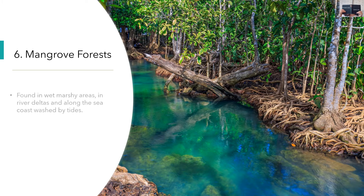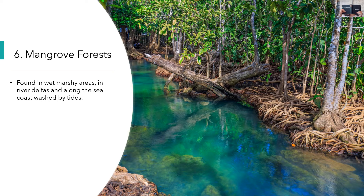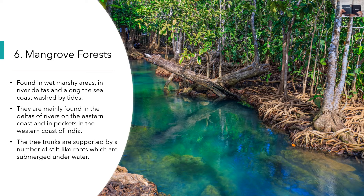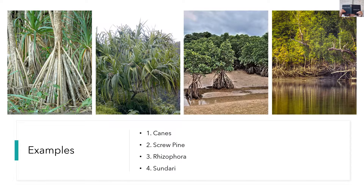Mangrove Forest: These forests are found in wet marshy areas in river deltas, in saline or other swampy areas along the sea coast. They are also called tidal forests. They are mainly found in deltas of rivers on the eastern coast and in pockets of the western coast of India. The tree trunks are supported by stilt-like roots which are submerged underwater. Some important trees are rhizophora, canes, screw pine, and palms. Sundari trees are found in the Sundarbans delta of India and Bangladesh — the world's largest delta.